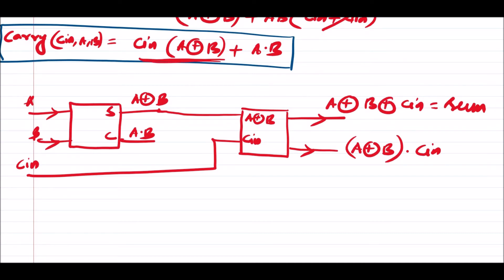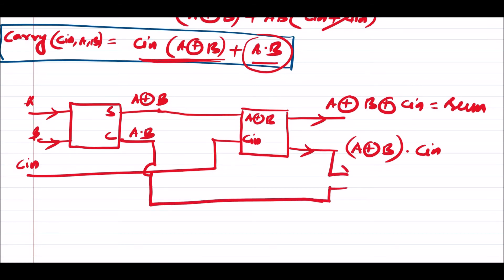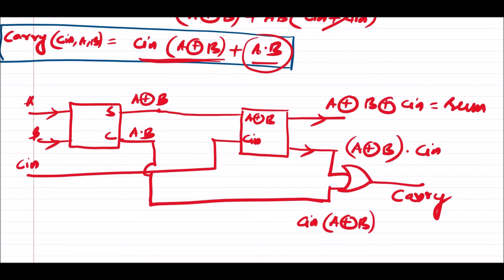The overall carry equation of the full adder is the OR operation of two terms: the carry output of the second half adder and the carry output of the first half adder. Connecting these two outputs with an OR gate gives us the final carry output, which equals Cin·(A XOR B) + A·B.